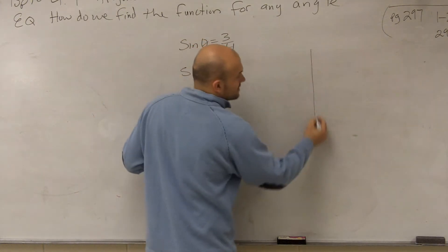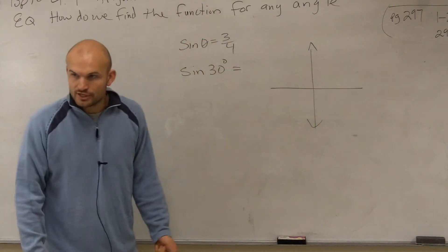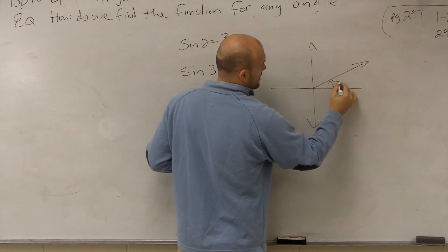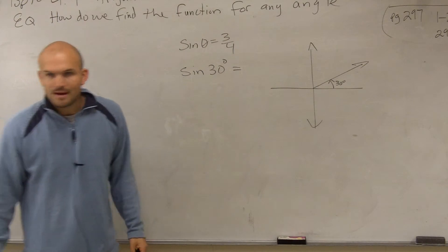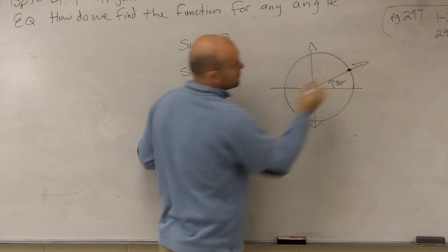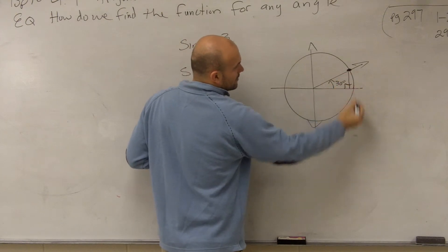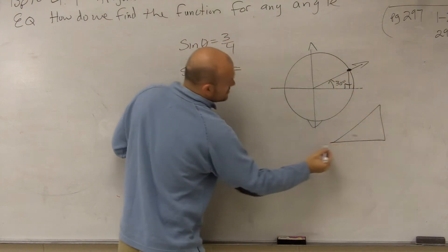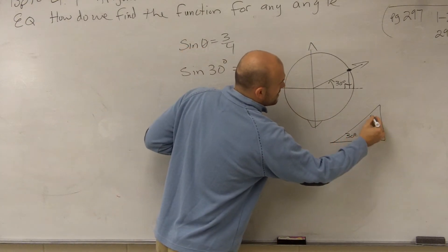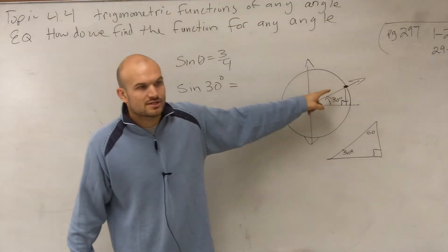Right? Because what we did, this is 4.2, if you guys remember. 4.2, the first thing I told you guys to do was to draw the angle 30 degrees. So here's your initial side, here's your terminal side. Right? So you drew an angle like that. Then, remember, we needed to determine where does that angle intercept on our unit circle.